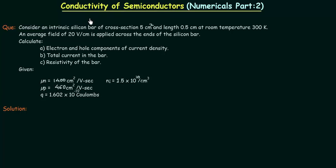Welcome to this presentation. We are going to solve another problem on conductivity of semiconductors. Consider an intrinsic silicon bar of cross section 5 cm square and length 0.5 cm at room temperature, which is 300 Kelvin.